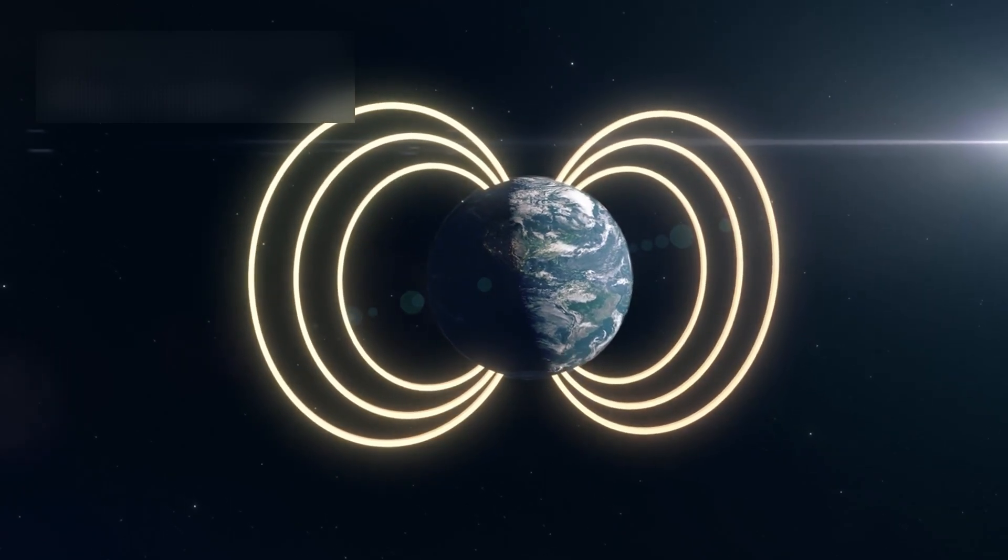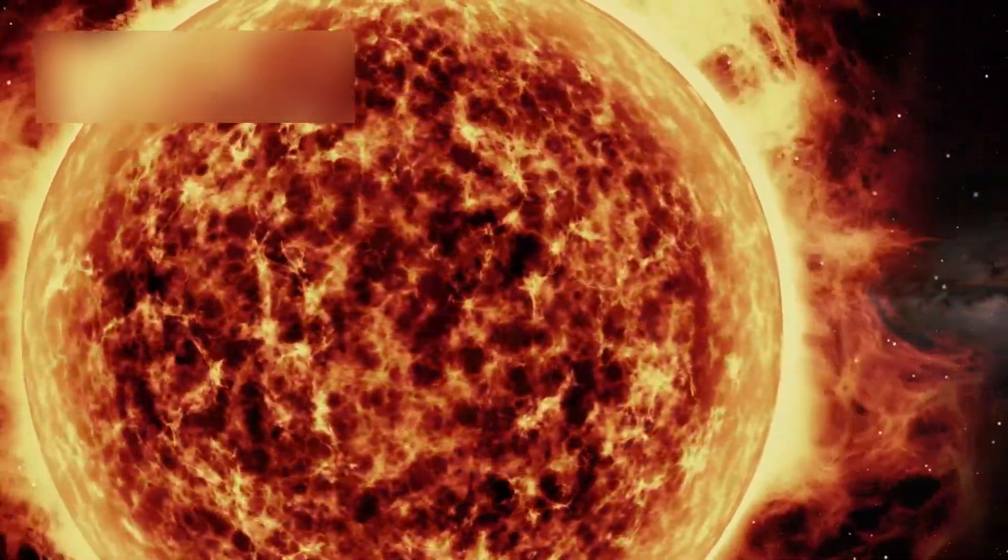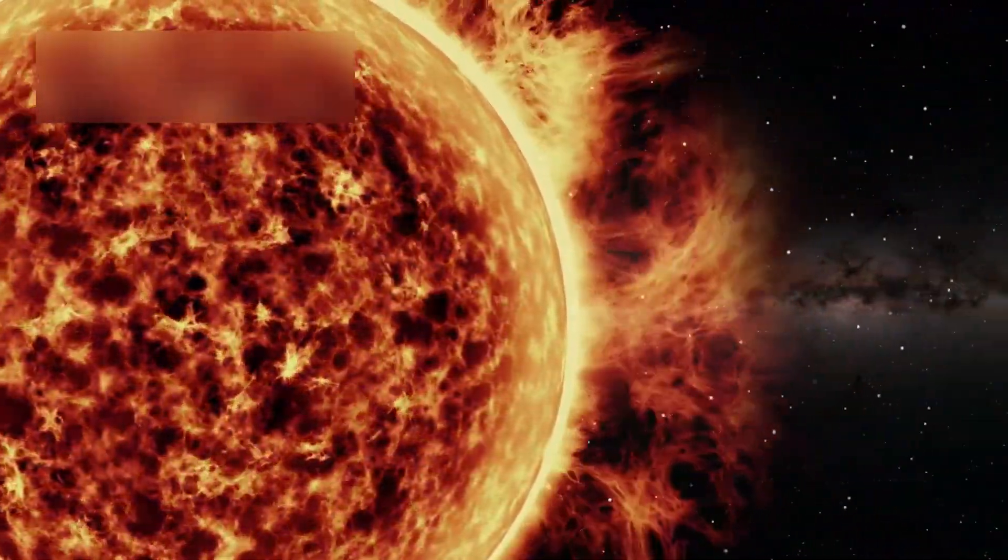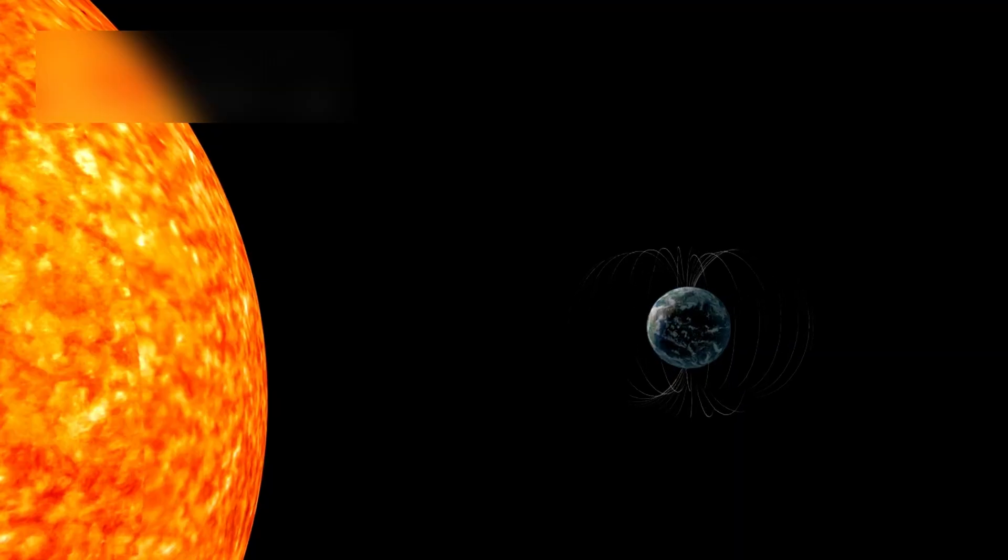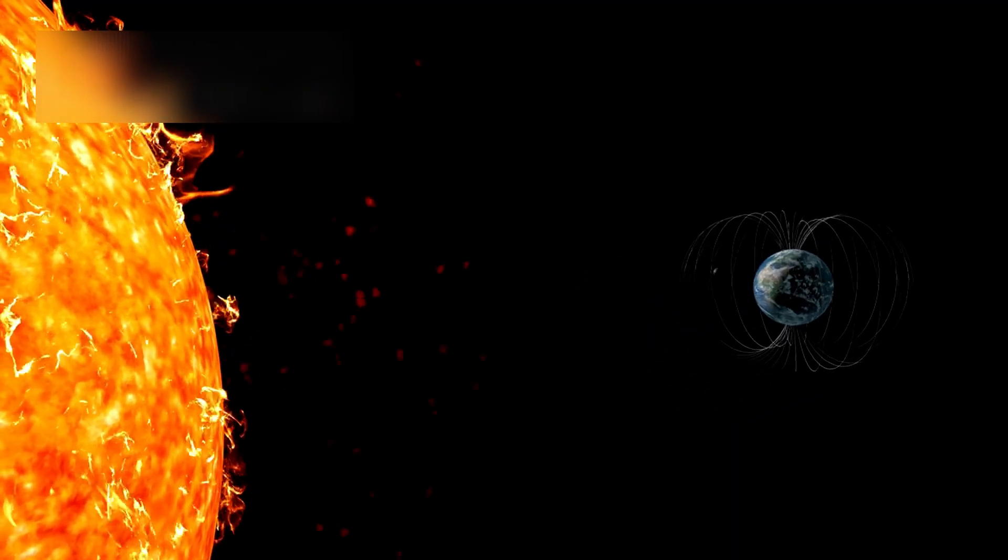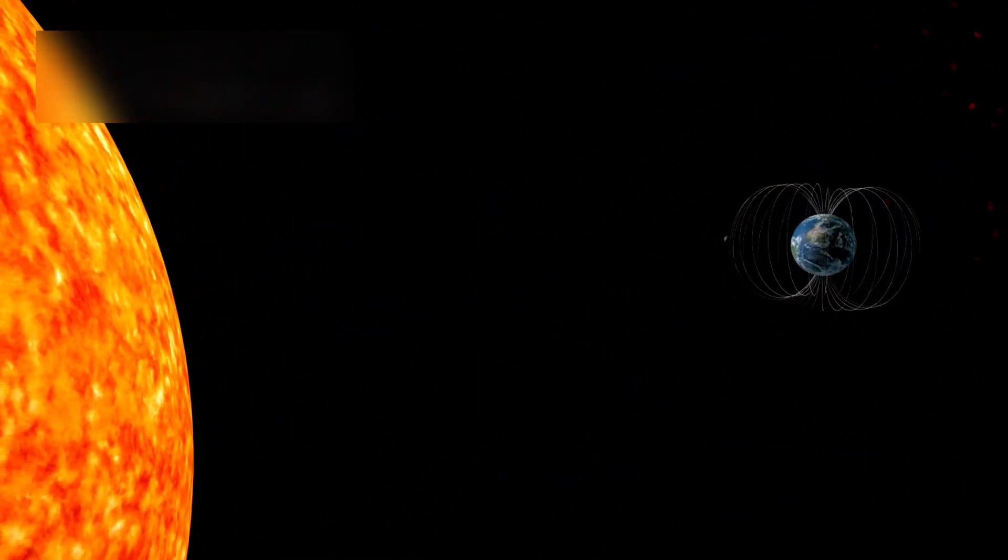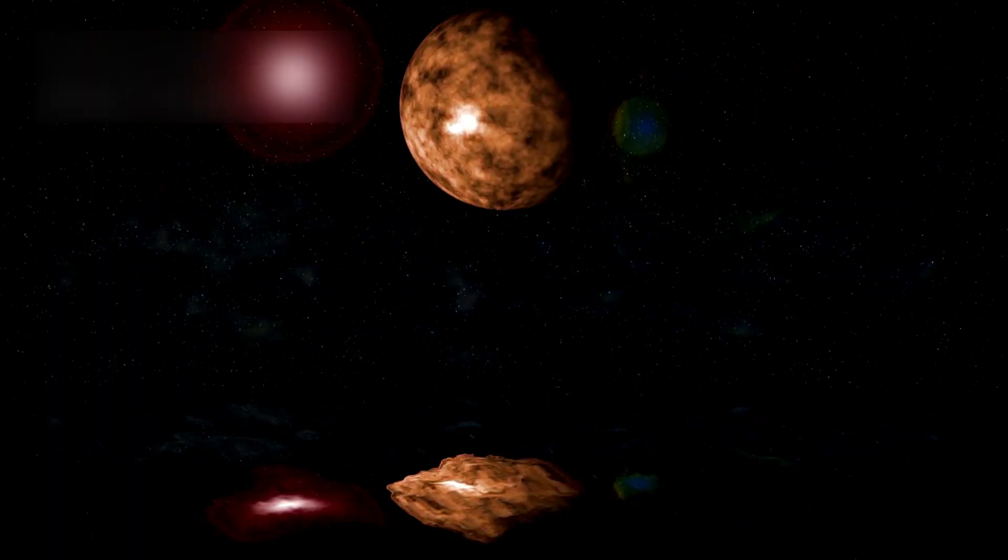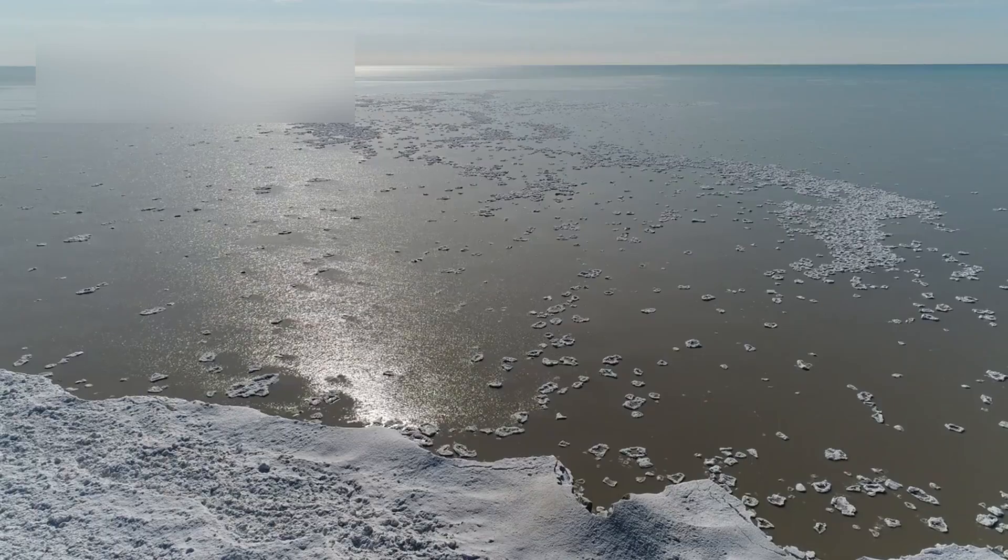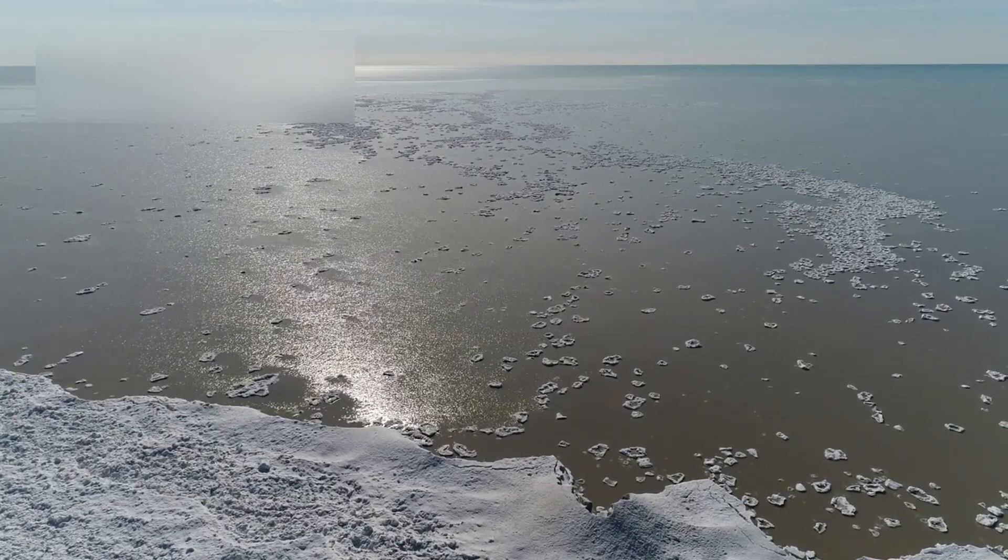Does Pluto have a magnetic field? Some indirect hints suggest it might, generated by interactions within its core and ocean. If confirmed, such a field could shield its atmosphere and subsurface water from solar wind, providing stability over billions of years. How stable is the ocean? Could it survive for billions of years without freezing, or does it exist in cycles of melting and refreezing?